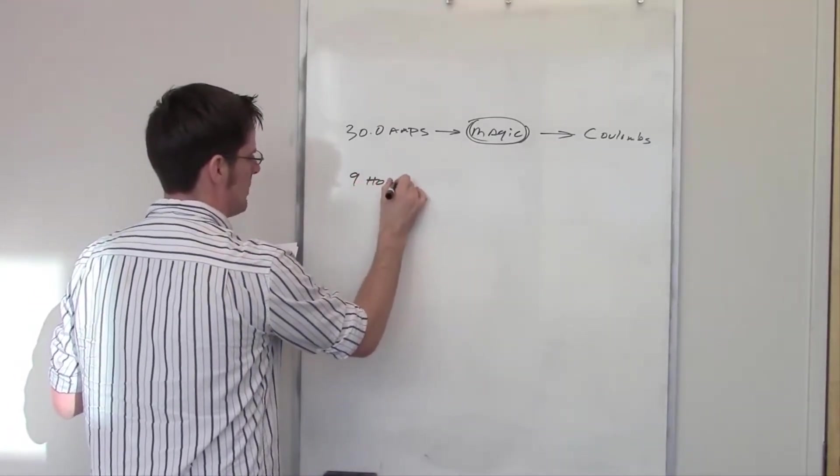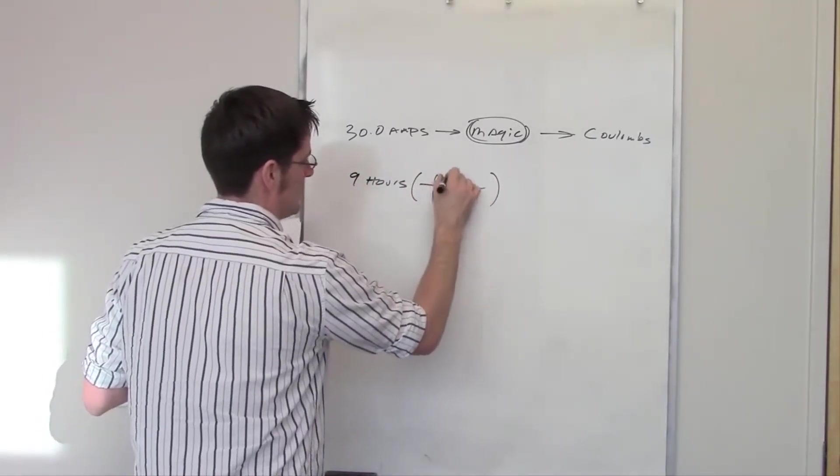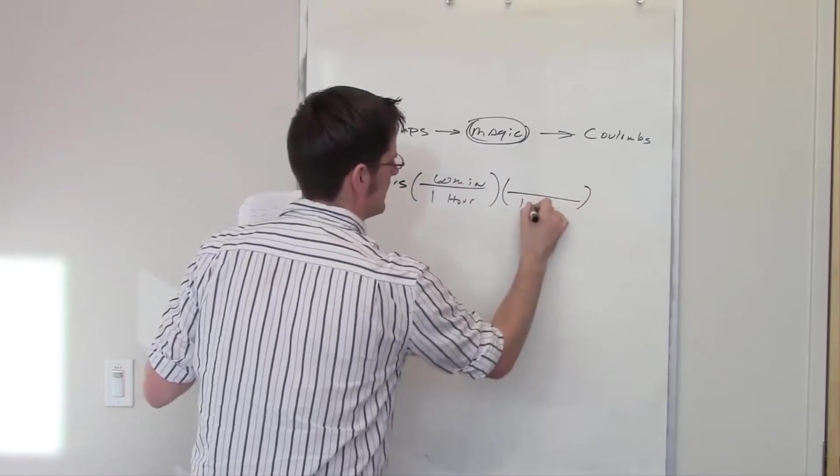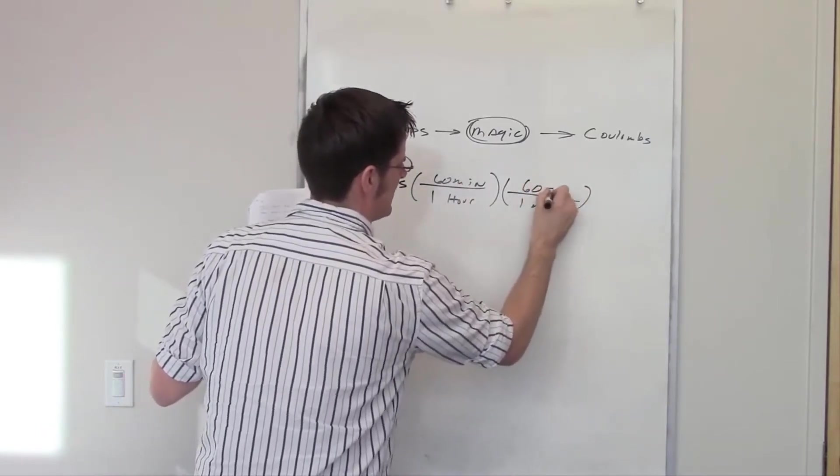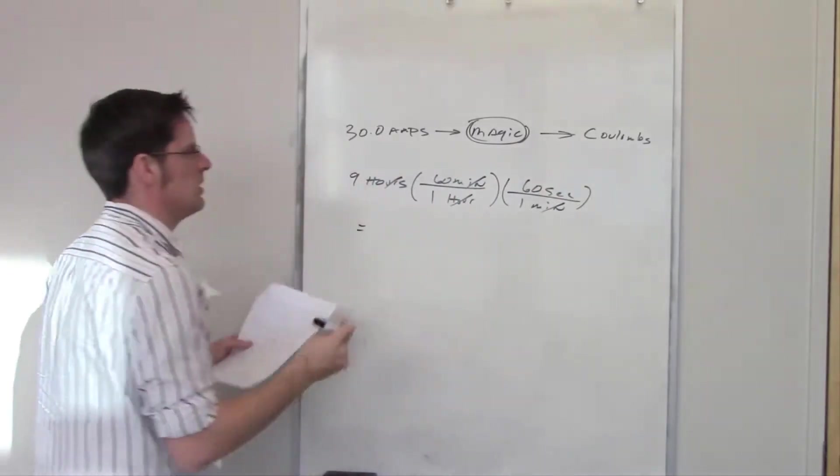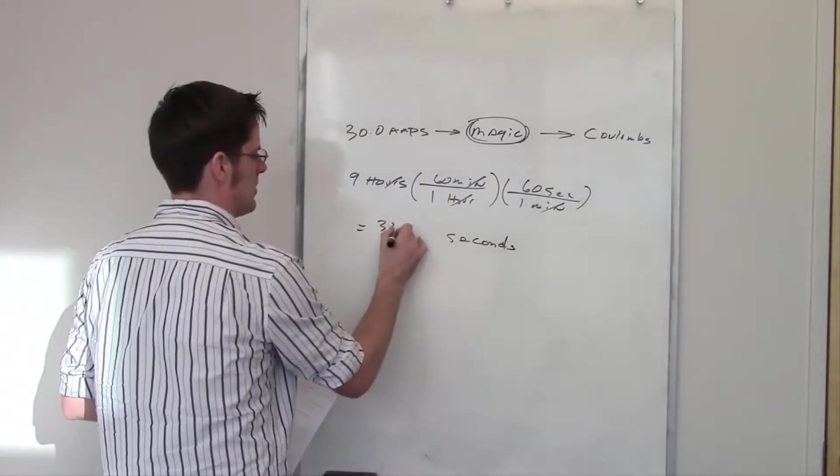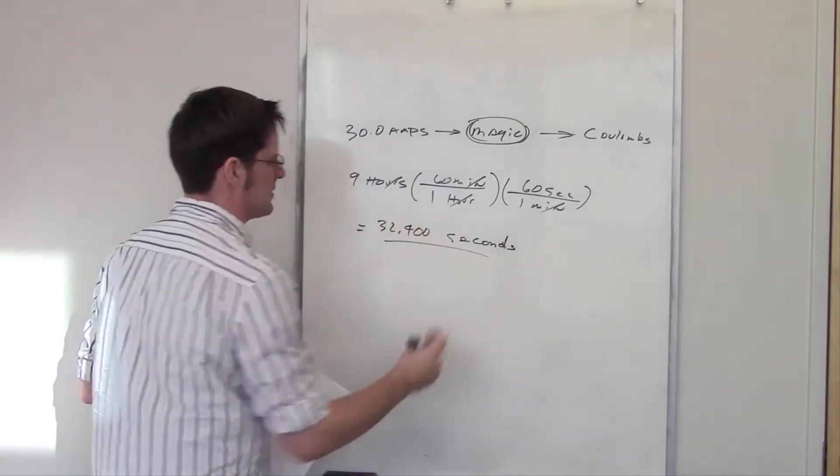Well, I've got nine hours, and you probably know that one hour contains 60 minutes, and one minute contains 60 seconds. So if I throw that in there, I end up getting a certain number of actual seconds, and that number comes out to be 32,400 seconds.